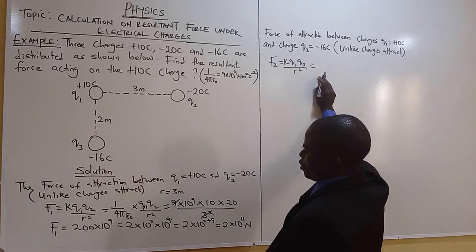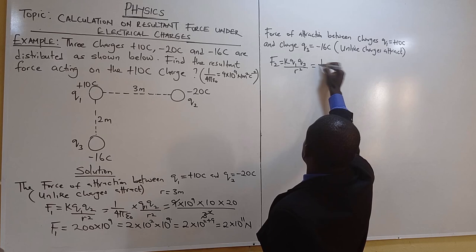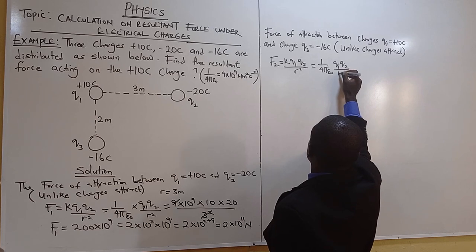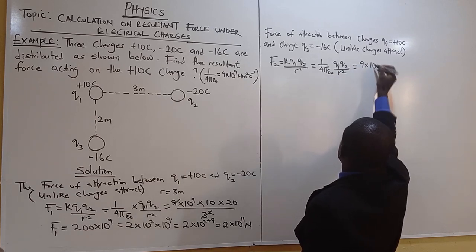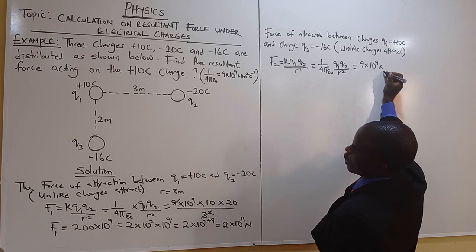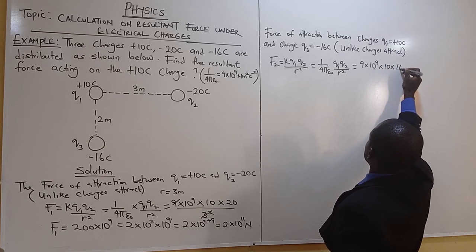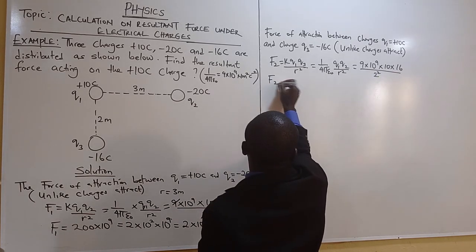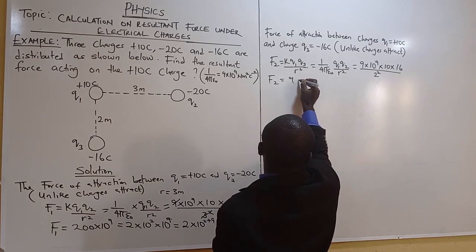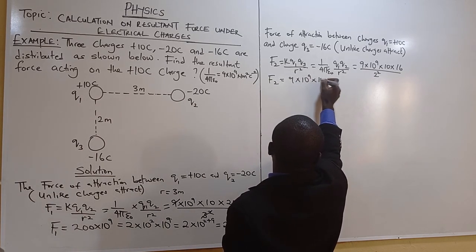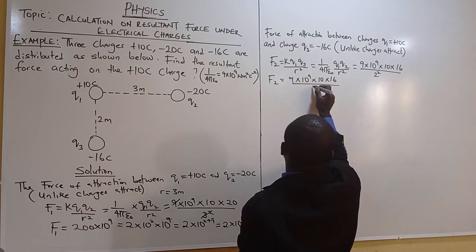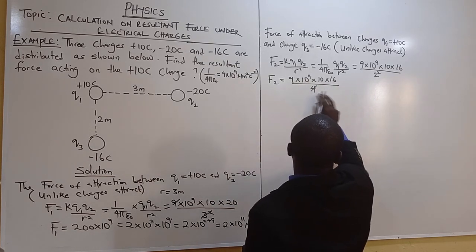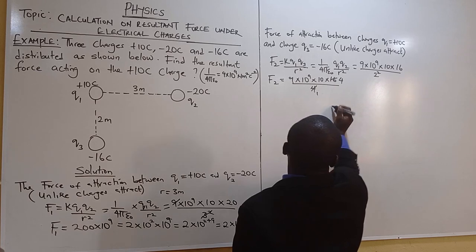The value of k is given as 1 over 4 pi epsilon-naught, approximately 9 times 10 to the power 9. So F2 equals 9 times 10 to the power 9 times 10 times 16 divided by 2 squared, which is 9 times 10 to the power 9 times 10 times 16 divided by 4.